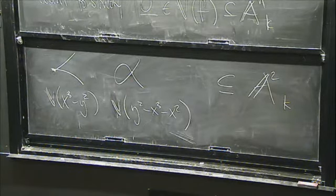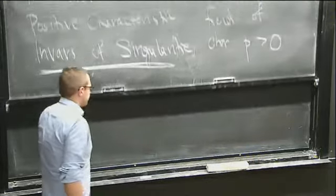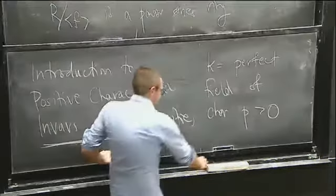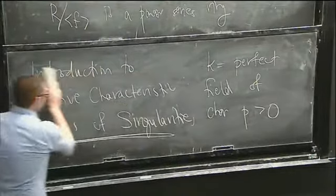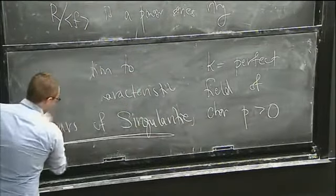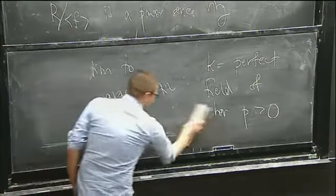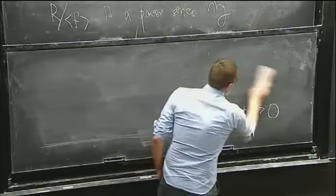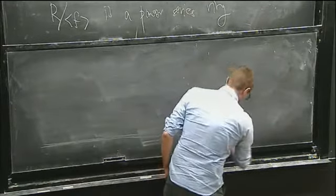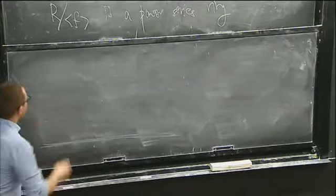So we're working in positive characteristic. I don't have the ability to appeal to integration or any analytic techniques, but what I do have the ability to use is the Frobenius endomorphism. So what is that?